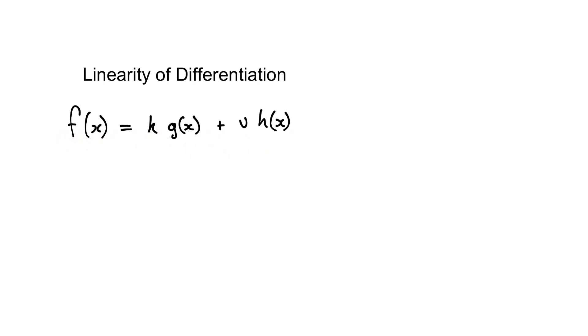Looking at this function f of x, we have two different dependencies of our function of x. So we have g of x and h of x. k and v are both just constants.